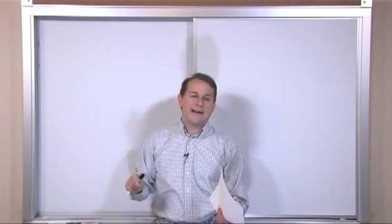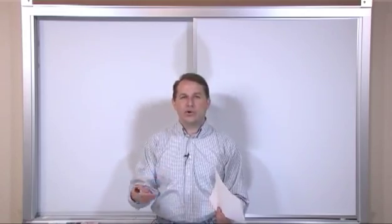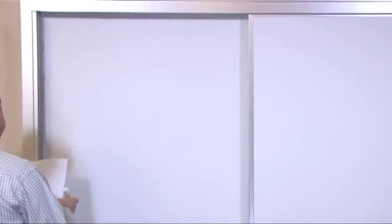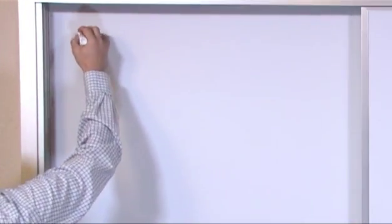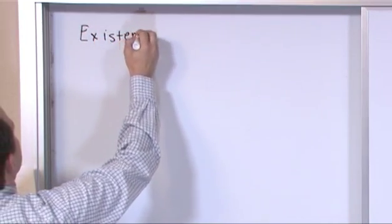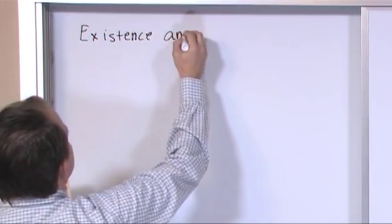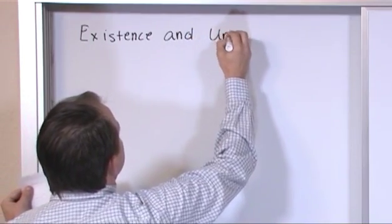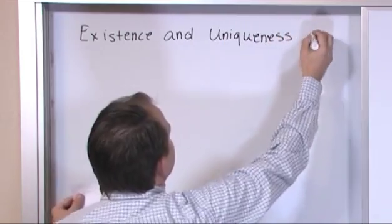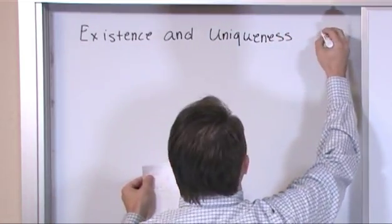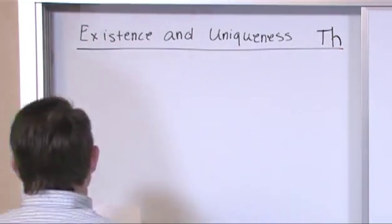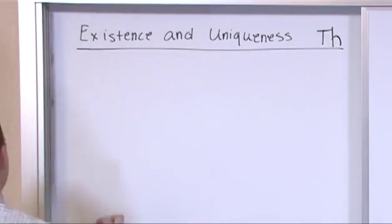What I'm going to do now is write it down so we can sort of dissect it so that when you read it in your book, it won't seem so foreign. All right, so what we have is what we're talking about is the existence and uniqueness theorem. Okay? That's what we're talking about.